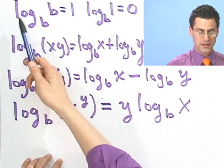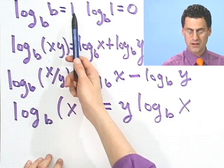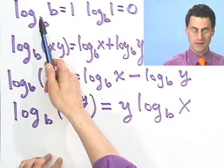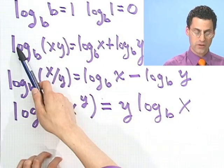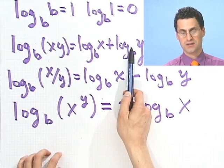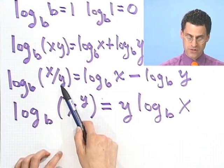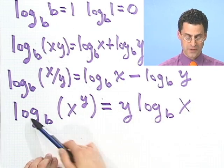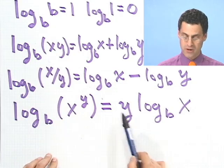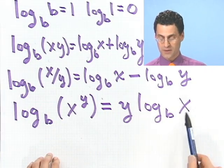So let's recap the properties. Remember that log base b of b is just 1, log base b of 1 is just 0. The logarithm of a product is the sum of the logs. The logarithm of a quotient is the difference of the logs. And a logarithm of x to the y power, that y can be pulled out in front as a coefficient, and I see y log of x.